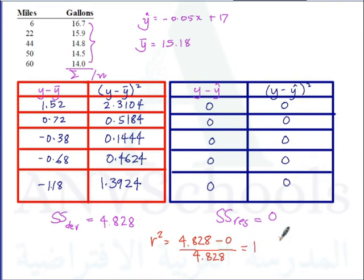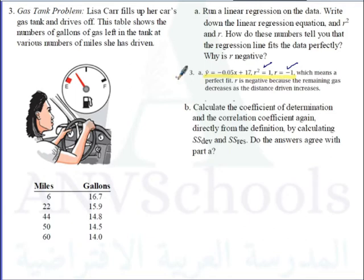The square root of r-squared gives us our correlation coefficient. That is negative 1 — negative because the data decreases. The gallons of fuel left in the tank decrease over the distance driven. That's why r is negative 1. Because r equals negative 1, it fits the data perfectly, consistent with what we got in part 3A.